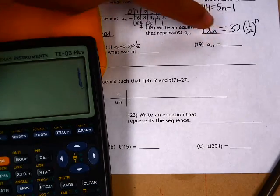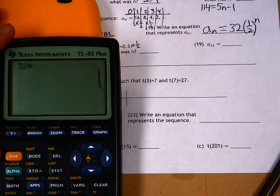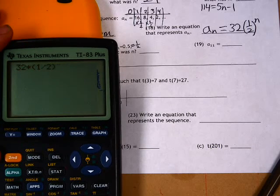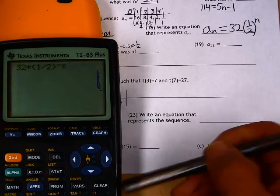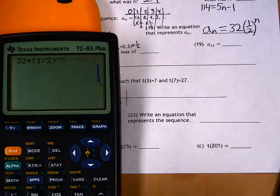So I'll try 32 times one half, and use this button here to get the exponent. And I'll try a number.